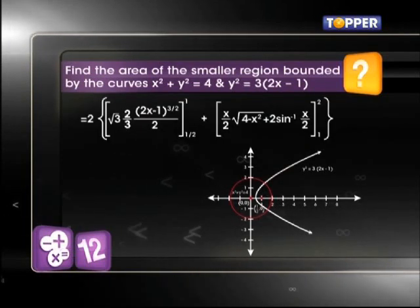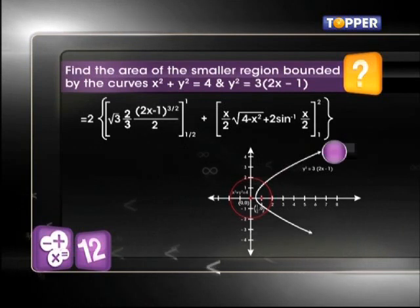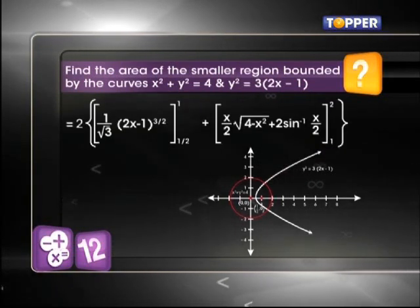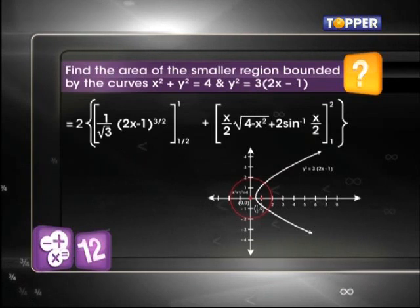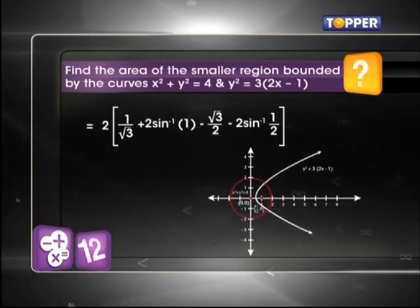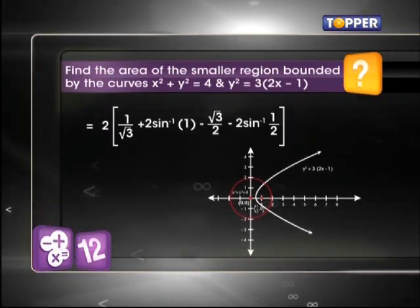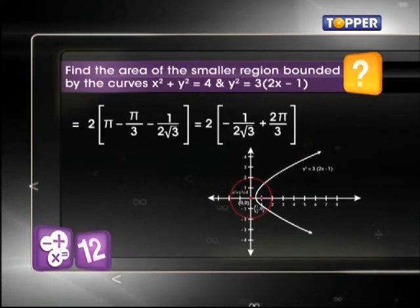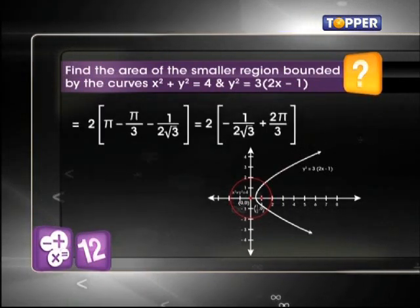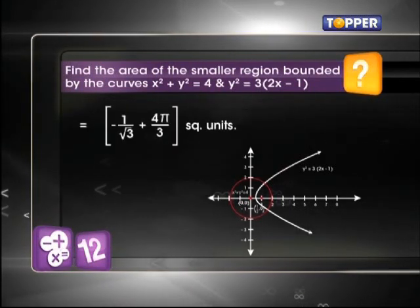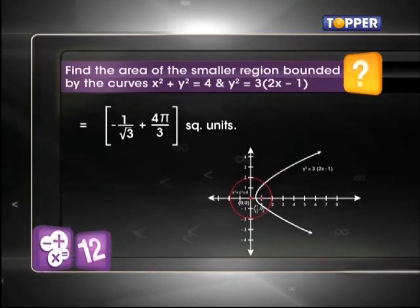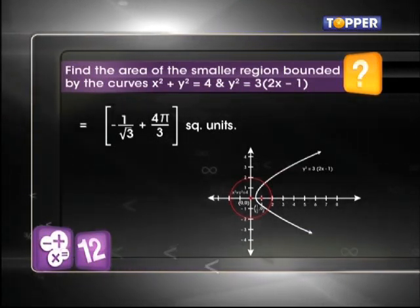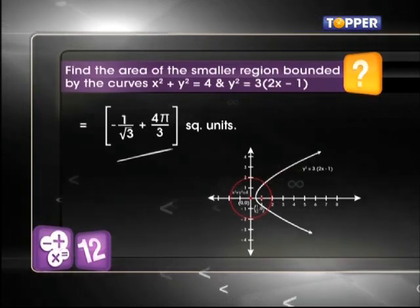And on integration and solving, we get the area between these two curves is equal to -1/√3 + 4π/3 square units, which is the required area.